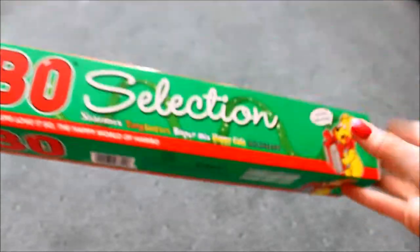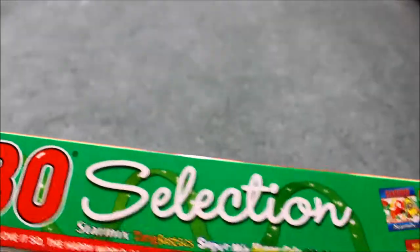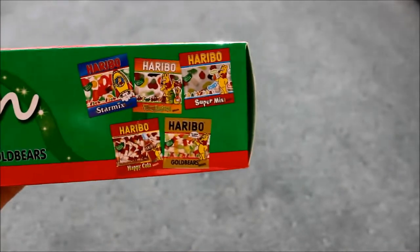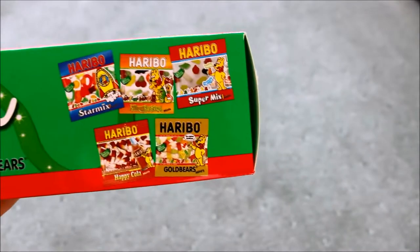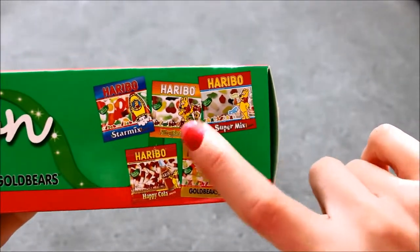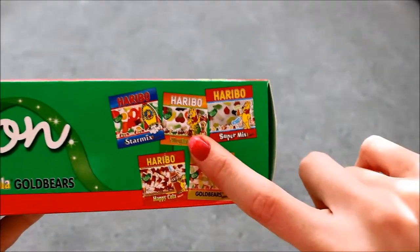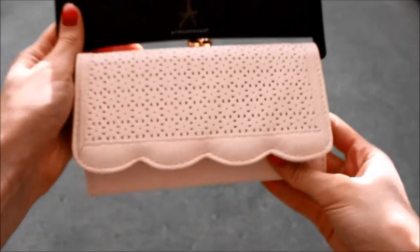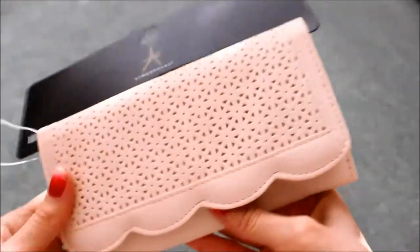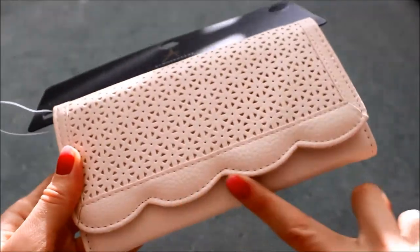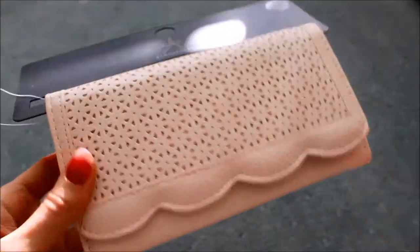I got just a small little tube of Haribos - you get all the varieties in it: the Starmix, the Tangfastics, the Supermix, the Cola Bottles, and the Goldie Bears. My favorite is the Supermix and the Tangfastics ones - the more tangier they are, the better. I've got this proper nice purse from Primark with this detailing on the front and the scalloped edge.